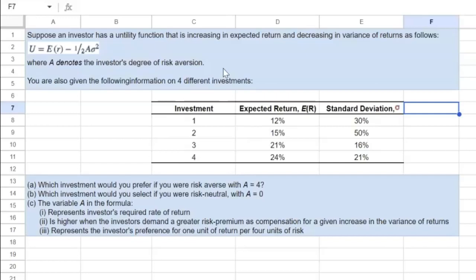Before we proceed, I want to highlight a couple of things. Notice that the utility that the investor is deriving from an investment is an increasing function of expected return. So all else equal, if the expected return goes up, then the utility goes up, which makes sense.